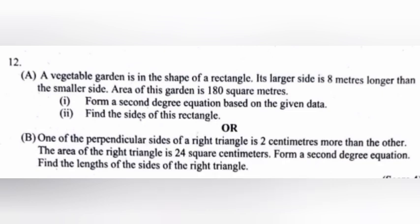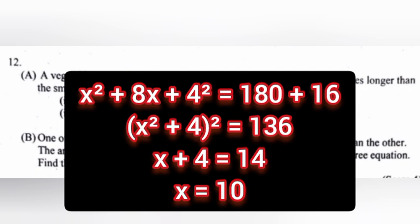2. Find the sides of this rectangle. Answer: x square plus 8x plus 4 square equal 180 plus 16. x square plus 4 the whole square equal 136. x plus 4 equal 14. x equal 10.